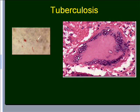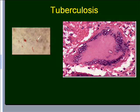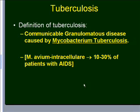This is a must-know area: how to define tuberculosis. It is a granulomatous, communicable disease caused by Mycobacterium tuberculosis. However, if the patient has AIDS, the organism is Mycobacterium avium intracellulare. Remember: if discussing tuberculosis in a patient with AIDS, the probable organism is Mycobacterium avium intracellulare; otherwise, in most other populations, it is Mycobacterium tuberculosis.